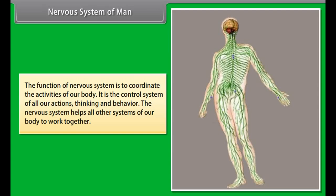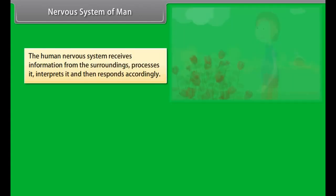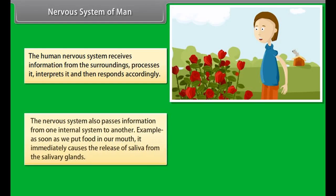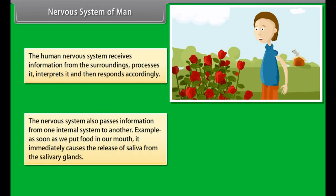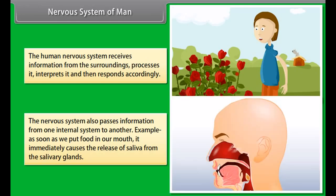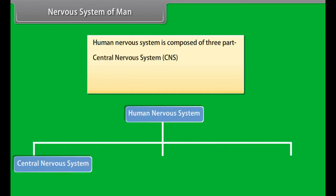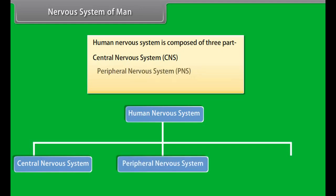The function of the nervous system is to coordinate the activities of our body. It is the control system of all our actions, thinking, and behavior. The nervous system helps all other systems of our body to work together. The human nervous system receives information from the surroundings, processes it, interprets it, and then responds accordingly. It also passes information from one internal system to another — for example, as soon as we put food in our mouth, it immediately causes the release of saliva from the salivary gland.